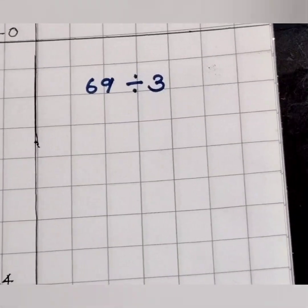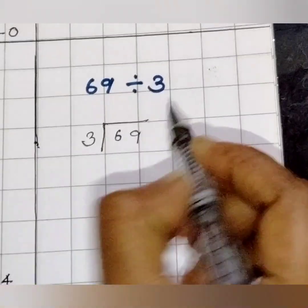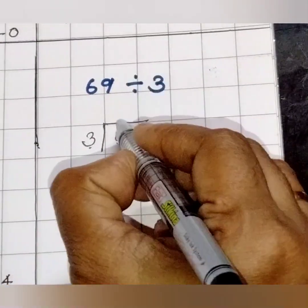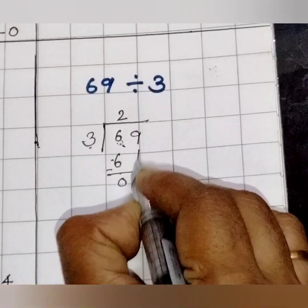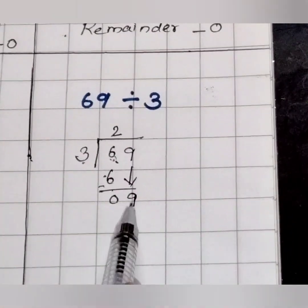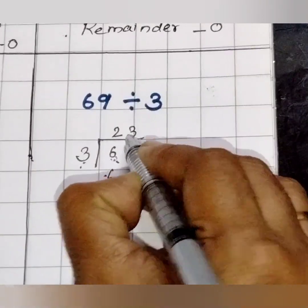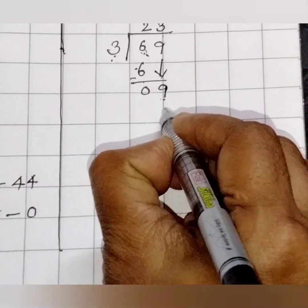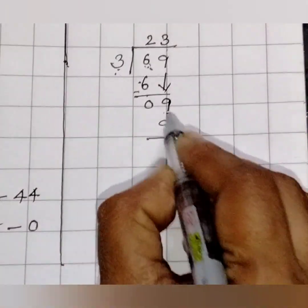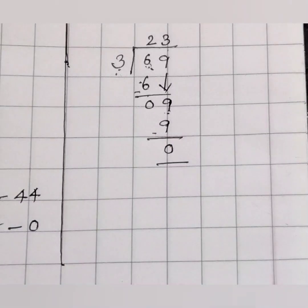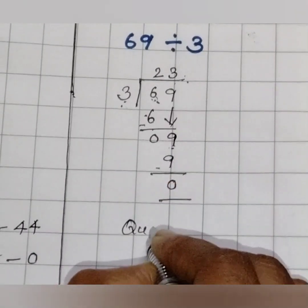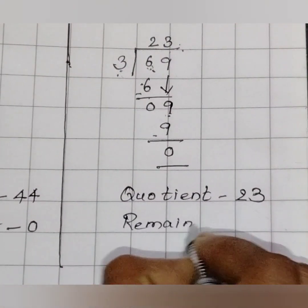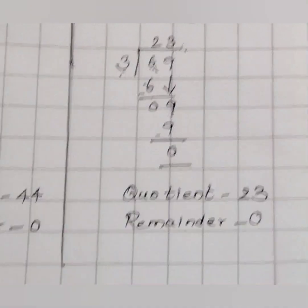Coming to the next question: 69 divide by 3. 3 is smaller than 6, so we can take it alone. 3 twos are 6. 6 minus 6 is 0. Bring down 9. 3 threes are 9. 9 minus 9 is 0. Our answer is 23 — that is, the quotient is 23 and the remainder is 0. In the next video I will show you division with remainders. Thank you for watching.